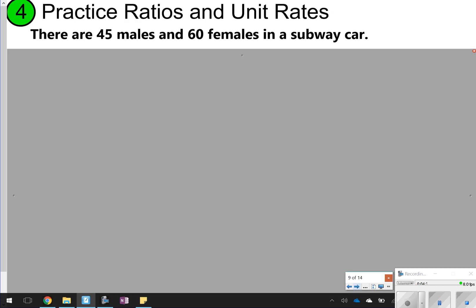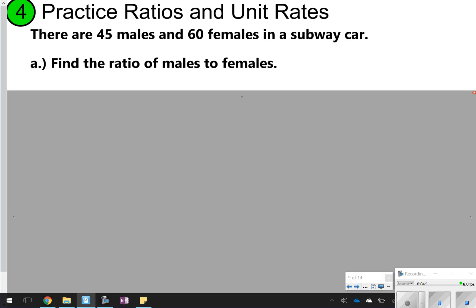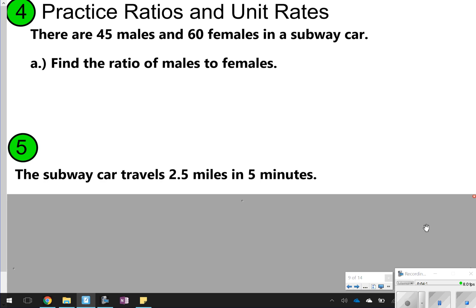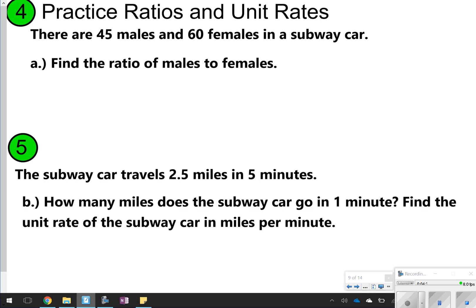These next two you're going to try on your own. I'm going to go ahead and just show you both questions because there's 4 and 5 on this page. Number 4 asks you to write the ratio of males to females. Go ahead and make sure that you simplify that ratio. And then for number 5, it's asking you to find the unit rate in miles per minute. Again, miles per minute means miles divided by minutes. Go ahead and take time now to pause the video, try 4 and 5, and then click play when you're ready to check.